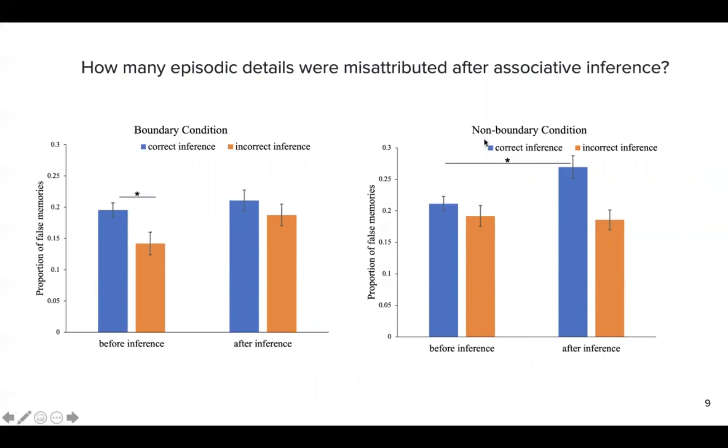As expected, people in the non-boundary group, after they successfully make this associative inference, they will be more likely to misattribute the detail to the wrong sources. But that didn't happen in the boundary condition. In the boundary condition, even after people successfully pair the two associations together, the proportion of memory misattribution will not increase.